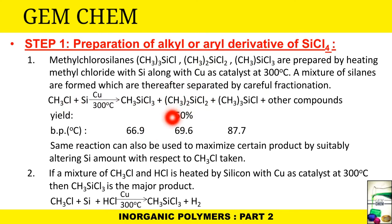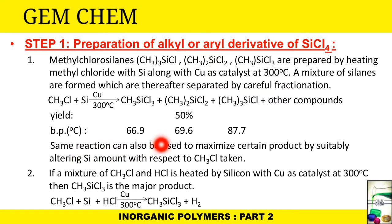If we concentrate on R2SiCl2, its yield is 50%, and the other two compounds constitute the remaining 50% of the yield. The same reaction can also be used to maximize a certain product by suitably altering the silicon amount with respect to CH3Cl. If we increase the concentration of silicon, R2SiCl2 will be formed more. If silicon concentration is decreased, plenty of CH3Cl will be left so the attack continues.